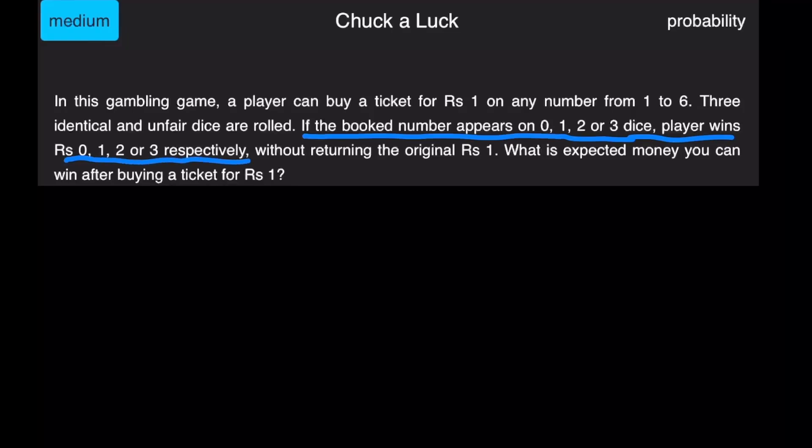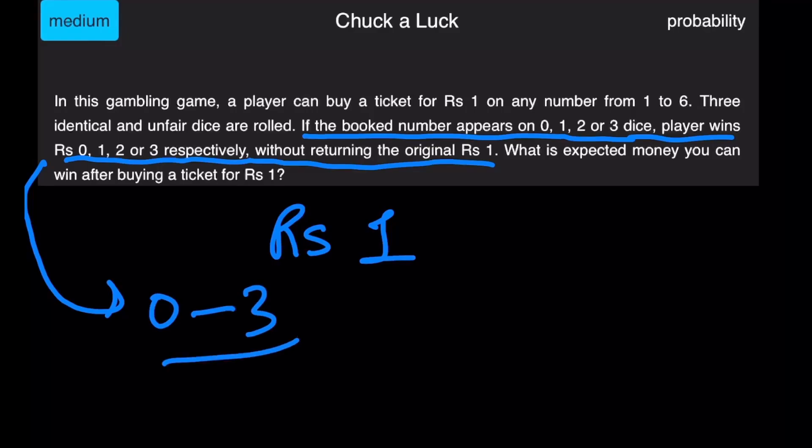So basically you're winning as much money as many times the booked number comes up, right? And we don't return the original one rupee. We're spending one rupee and we're betting on winning an amount from zero rupees all the way up to three rupees, and all of these values will have different probabilities. What we've been asked is what is the expected money you can win after buying a ticket?